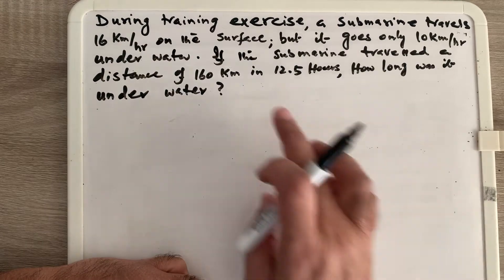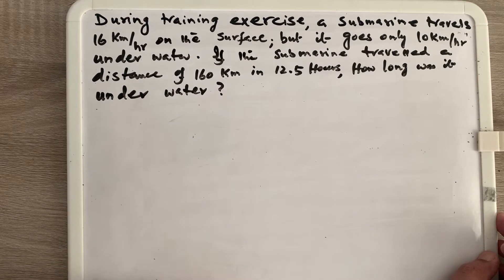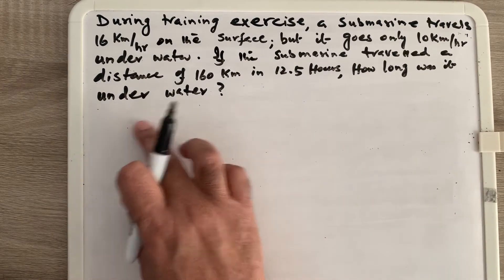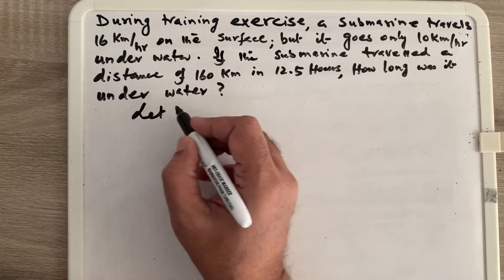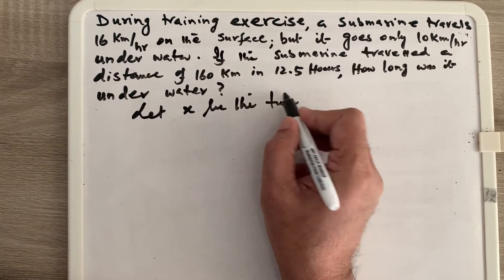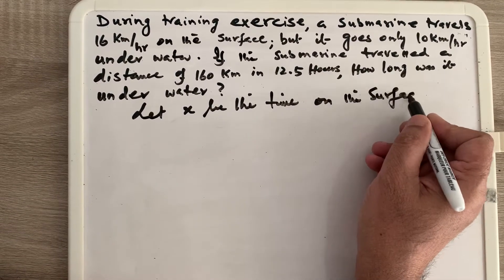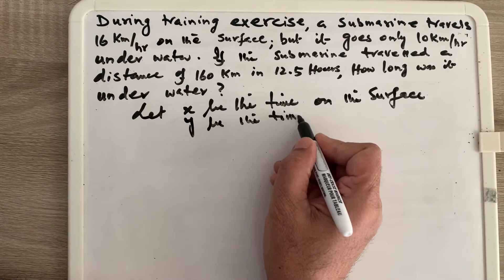The question is: if the submarine travels a distance of 160 kilometers in 12.5 hours, how long was it underwater? We can calculate both how long it was underwater and how long it was on the surface. So let x be the time of the submarine on the surface, and y be the time underwater.